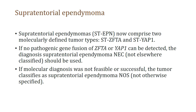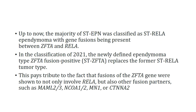Previously, the majority of supratentorial ependymomas were classified as supratentorial RELA fusion ependymoma with genetic fusions between ZFTA and RELA. In the recent classification, the newly defined ZFTA fusion type replaces the term supratentorial RELA fusion tumors. This is because the ZFTA gene has been shown to fuse not only with RELA but also with other fusion partners like MAML2/3, NCOA1/2, MN1, or CTNNA2. The second newly recognized category is YAP1 fusion positive ependymoma, typically harboring YAP1-MAMLD1 or YAP1-FAM118B fusions.